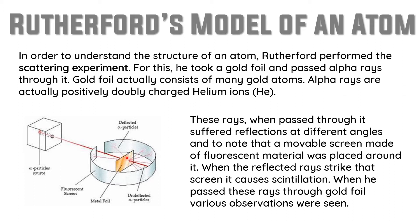Some rays are scattered at different angles, and some rays bounce back — very, very rarely. Like a rubber ball thrown towards a wall comes back, in the same way a very small proportion of rays bounce back, while other rays deviate at different angles.